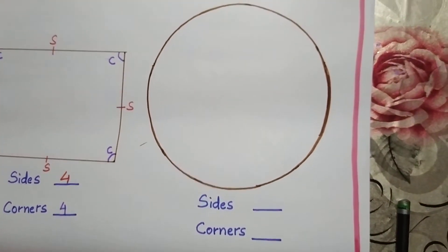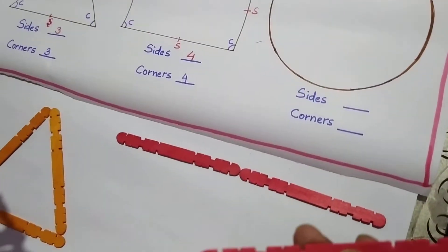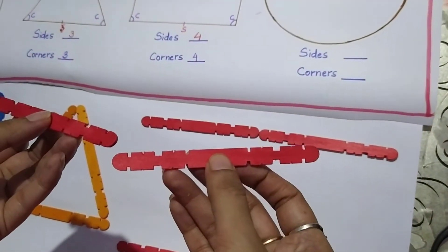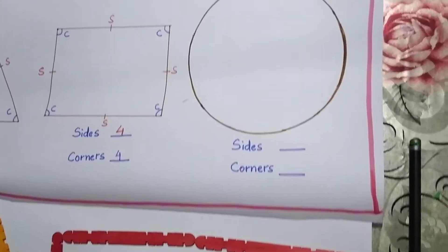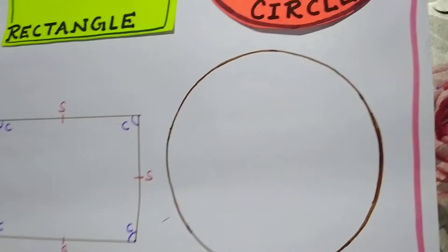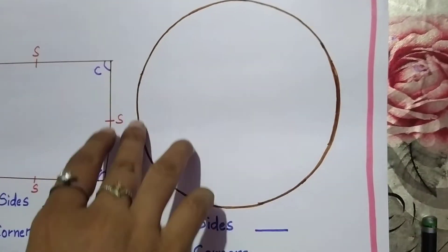Now the last one is circle. So is it possible to make a circle using these sticks? Can we make a circle using sticks? No, it is not possible. It means circle doesn't have any straight line.